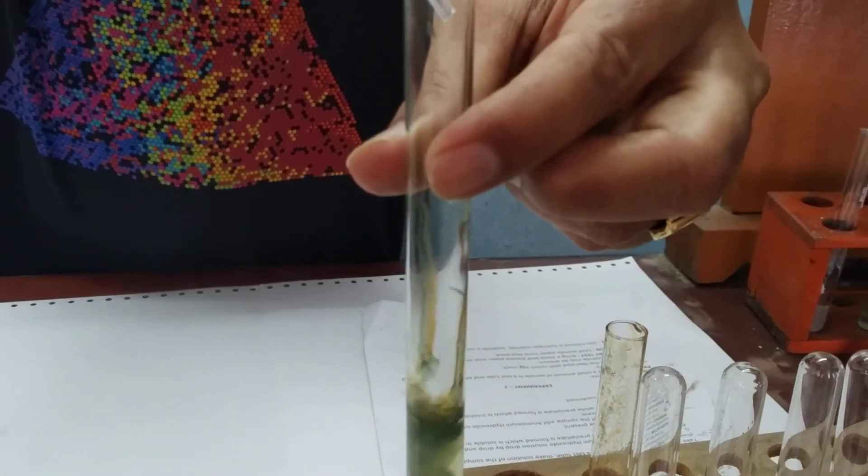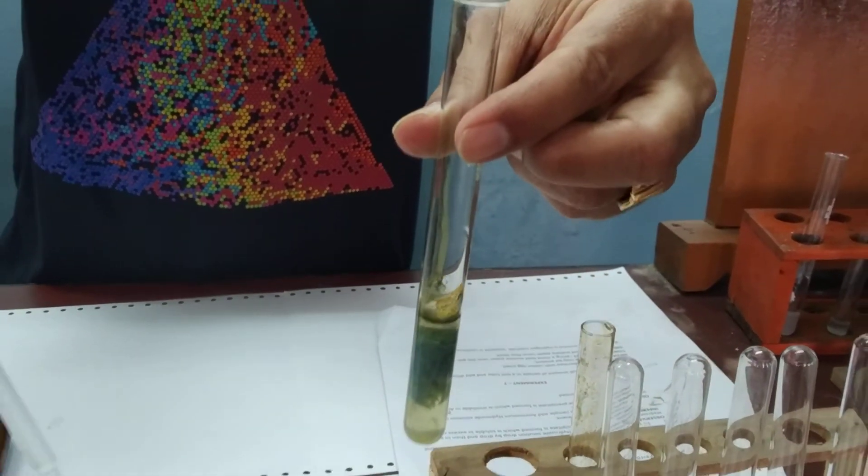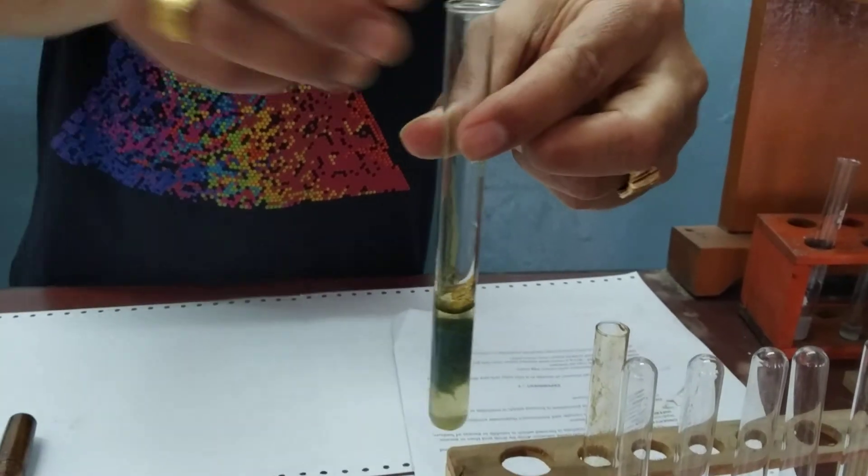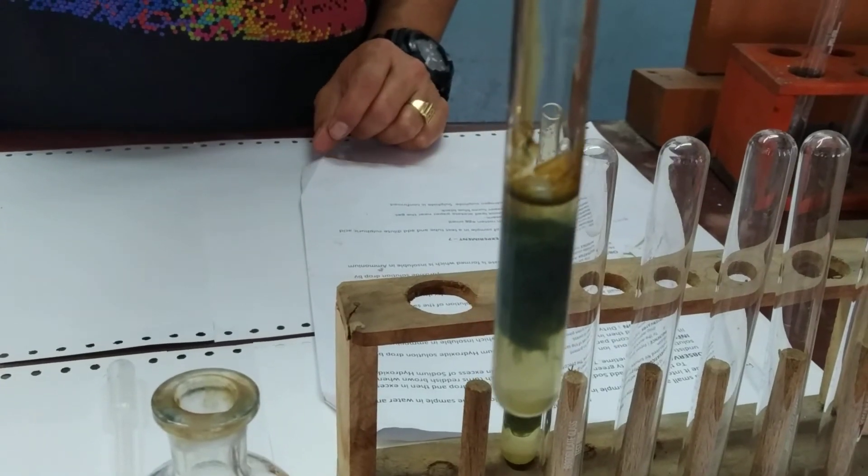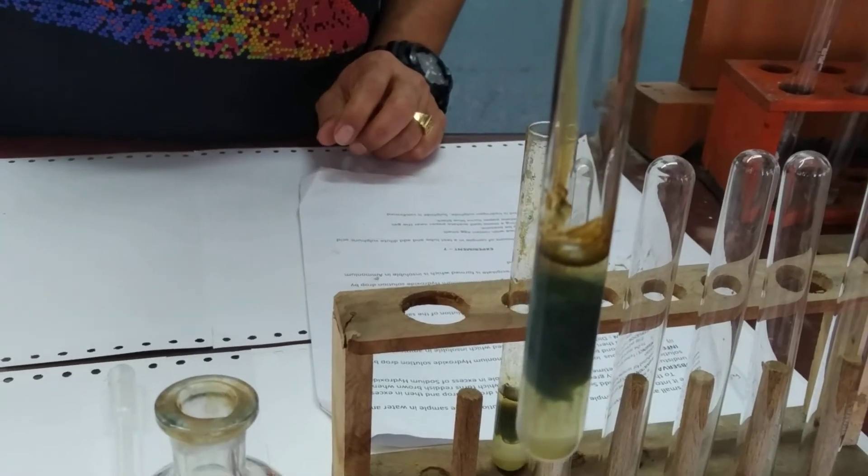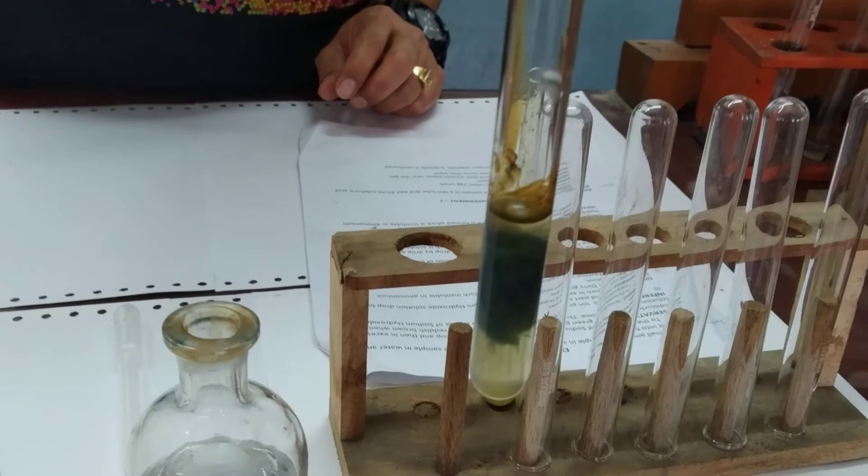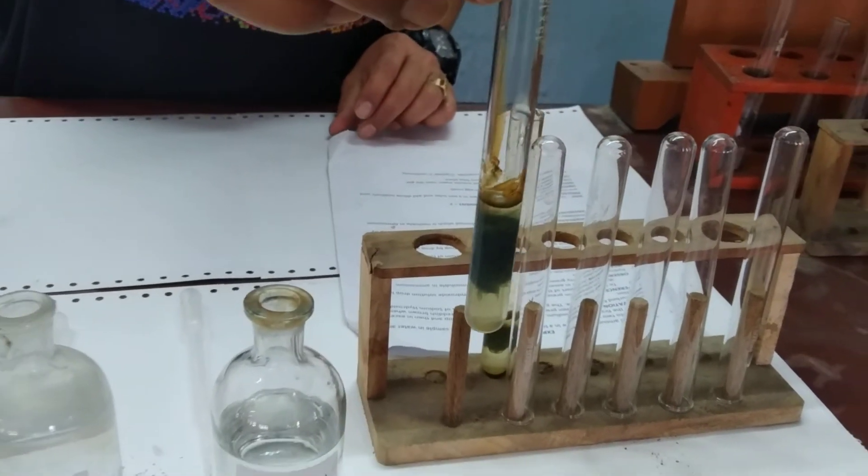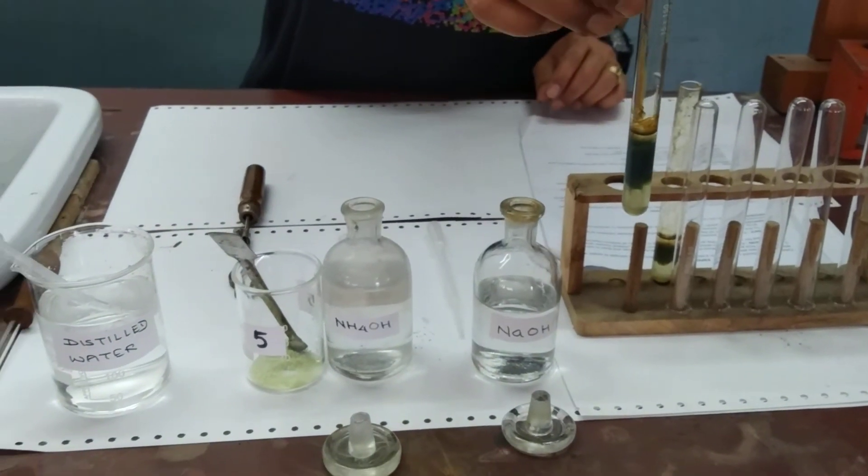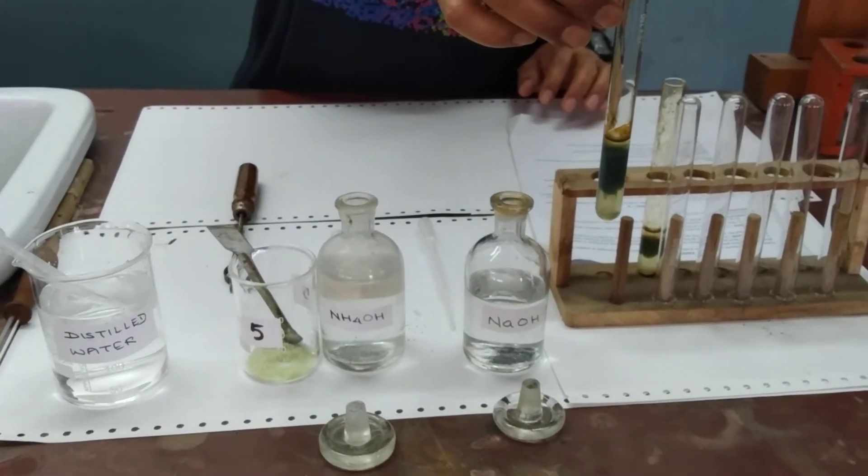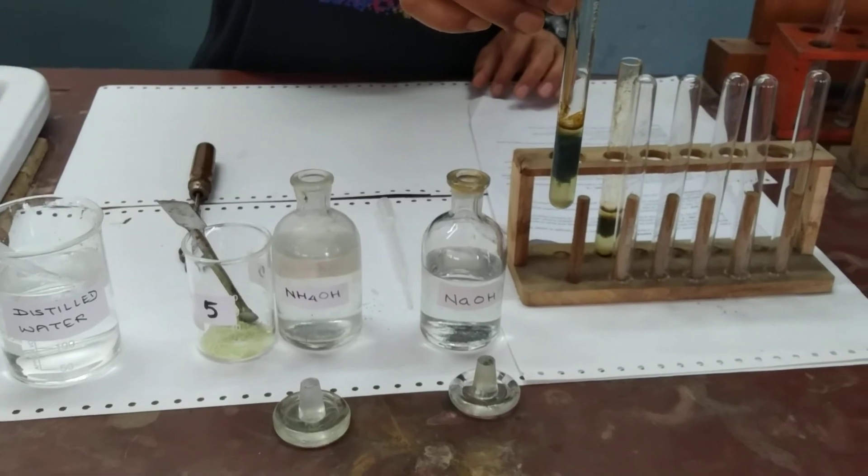We add more ammonium hydroxide and the dirty green precipitate is insoluble in it. With this experiment, we confirm that ferrous ions are present in the sample given to us.